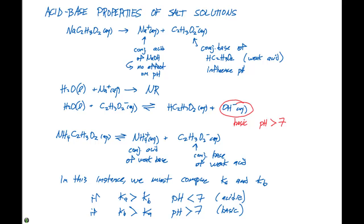In each of these instances, if we have one species, either the cation or the anion, that comes from a strong acid or a strong base, and one that comes from a weak acid or base, we only need to look at one of them, just like we did in this first case, and determine the pH.